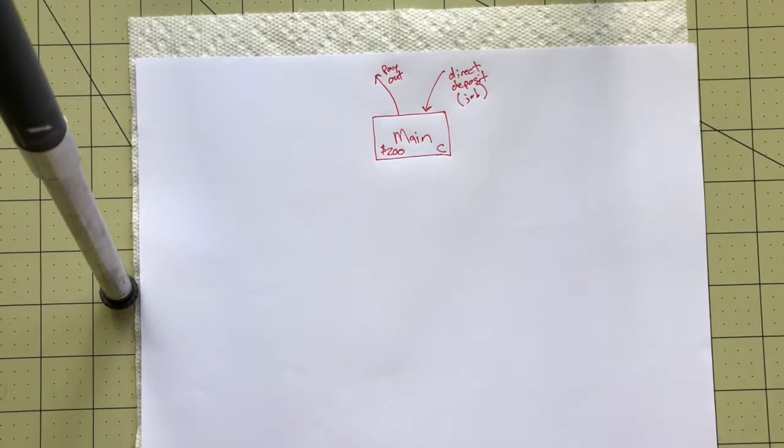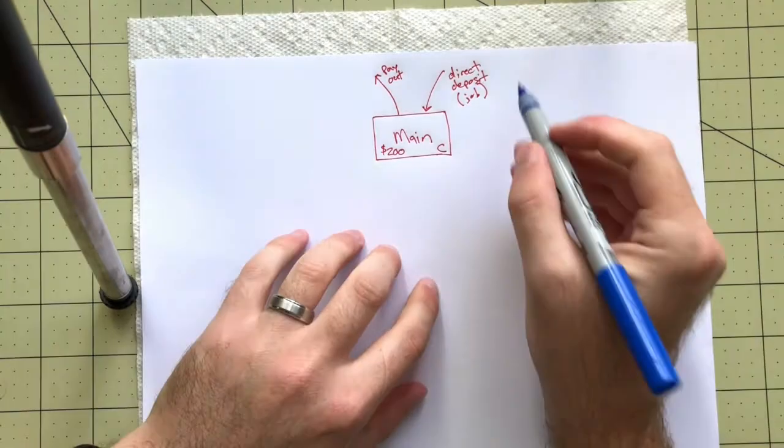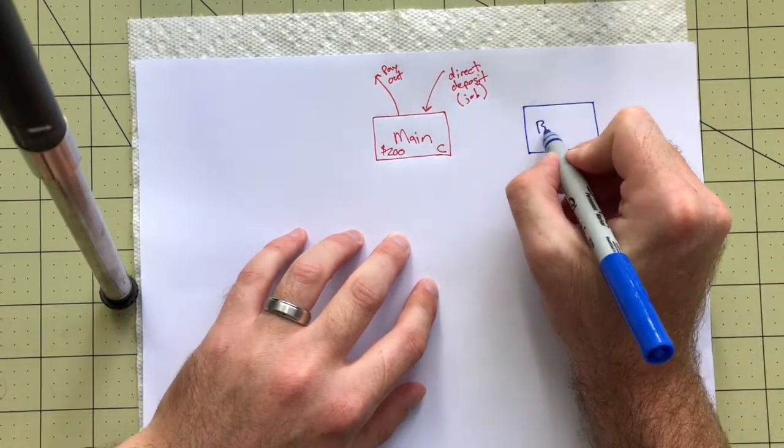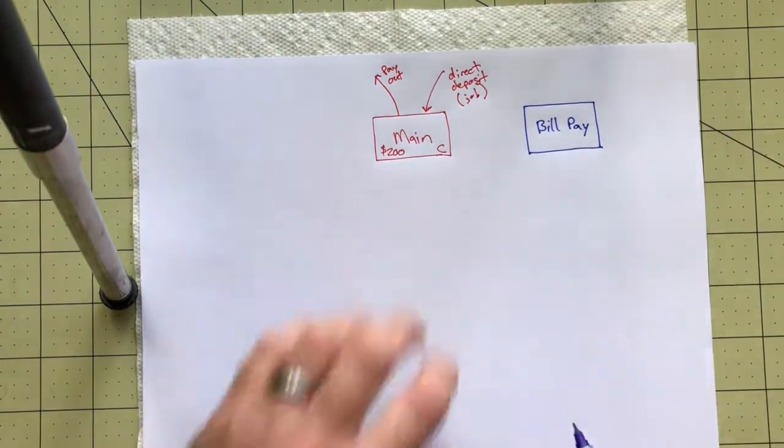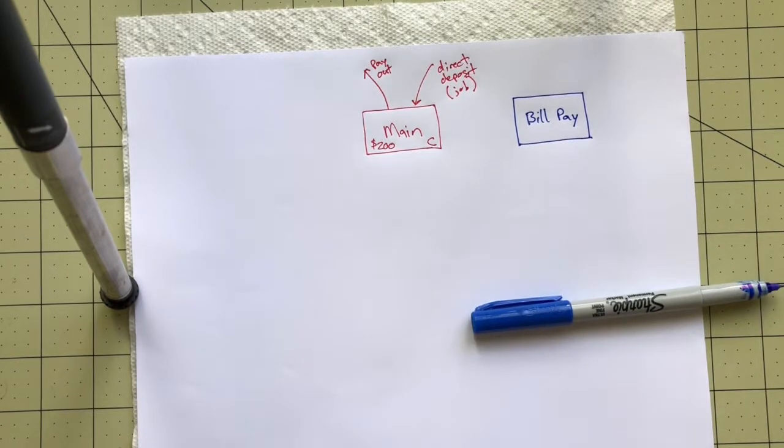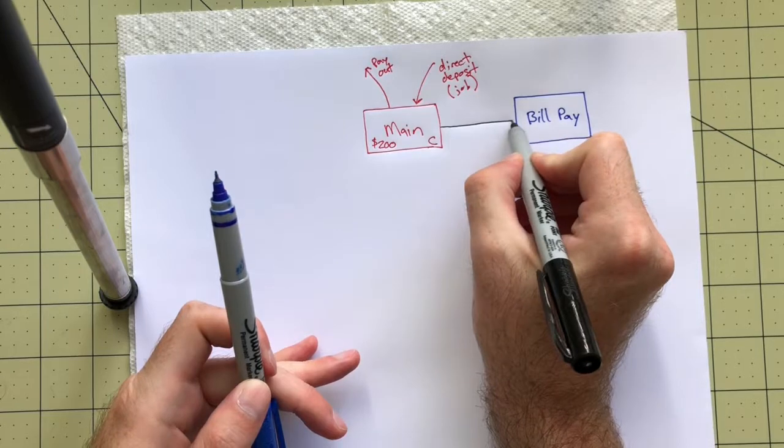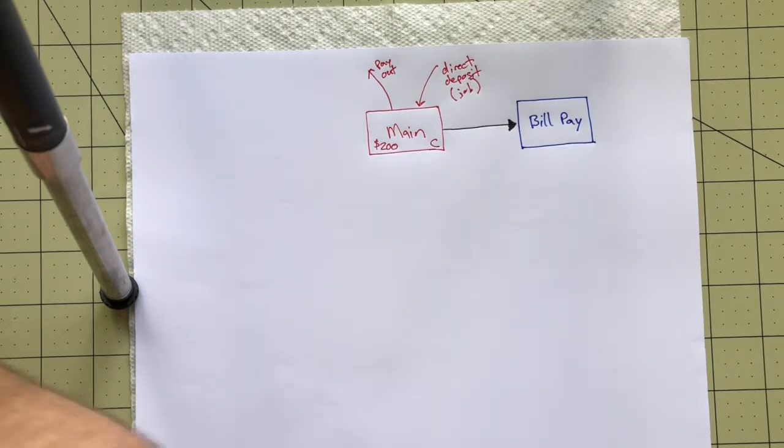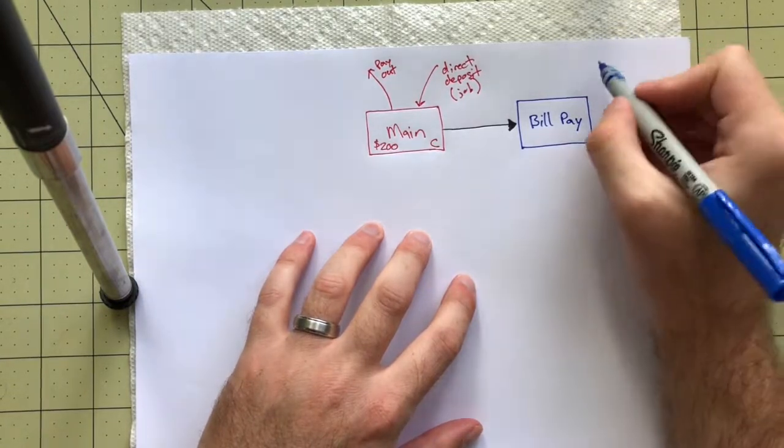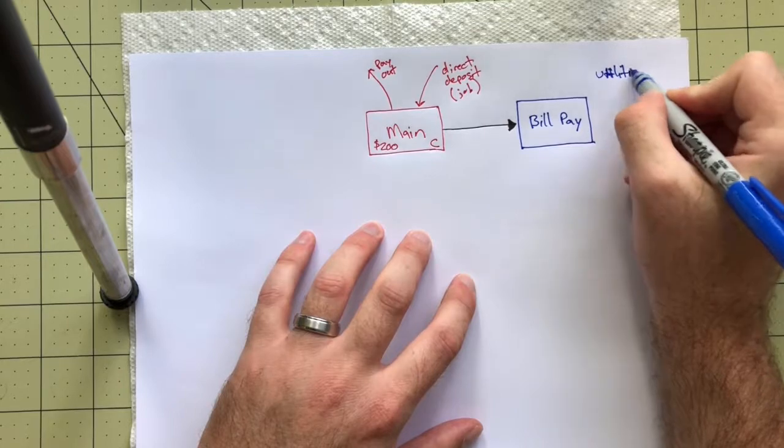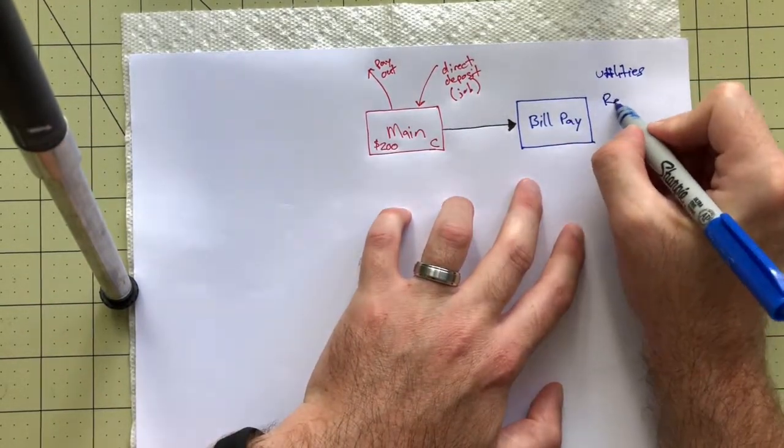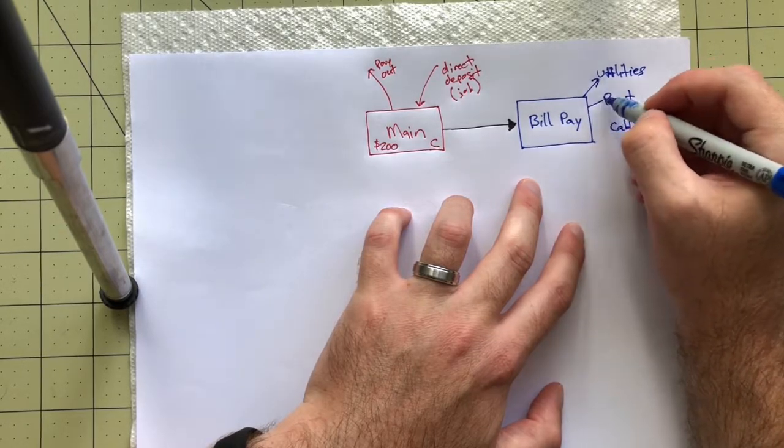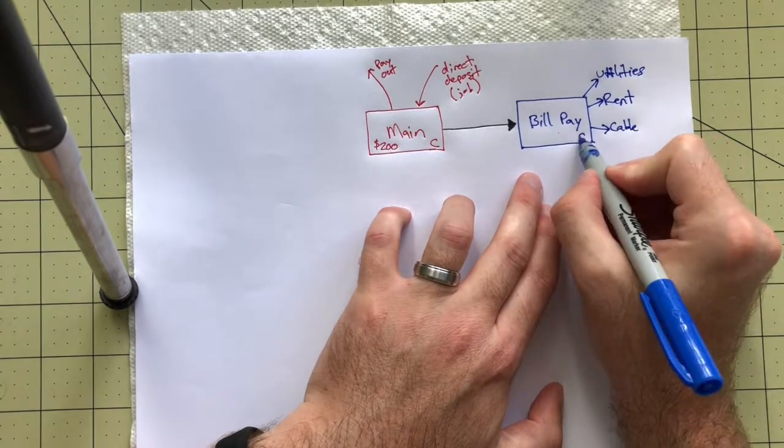Now from here, this is linked to another checking account over here. And this account is aptly named BillPay. BillPay, cash flow goes right through there. BillPay is a checking account that is directly linked to all of my bills. So this is where things like utilities, this would be things like rent, this would be things like the cable bill for internet. All of these bills are paid from the BillPay account, and this is also a checking account.